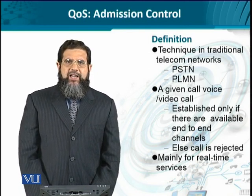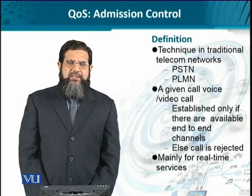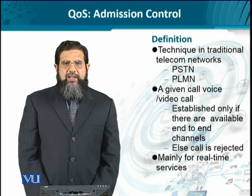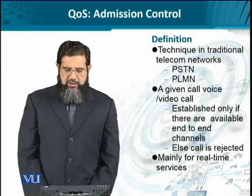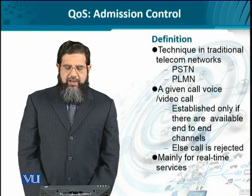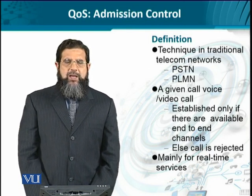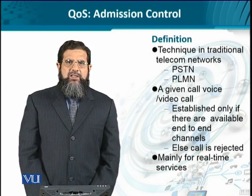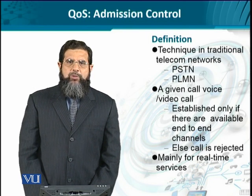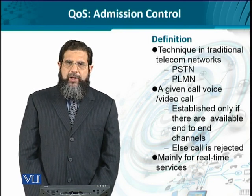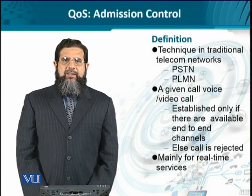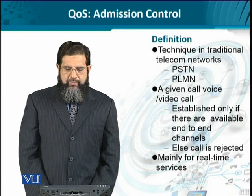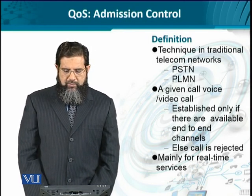Using this signaling, if the network realizes that it does not have enough resources, the call can be denied. Or else, if enough resources are available, then the call can be established end to end. For instance, in a TDM network, the time slots have to be available end to end. If it is an FDM network, then the frequency or a certain carrier has to be ensured for establishing the call.